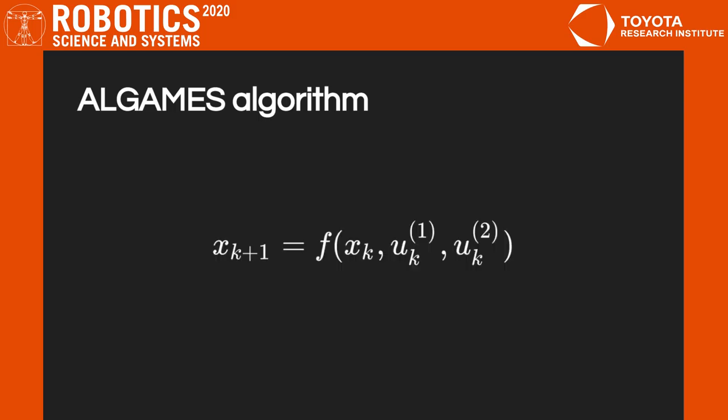In dynamic games, all agents interact through a joint dynamical system. They influence a joint state X through their individual control inputs, U. For clarity, we only present the two-agent case.